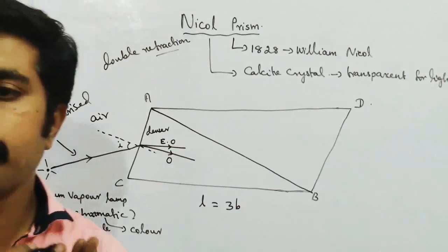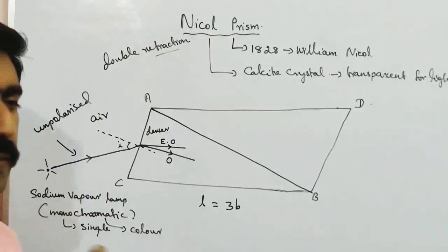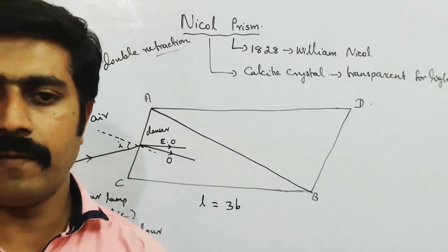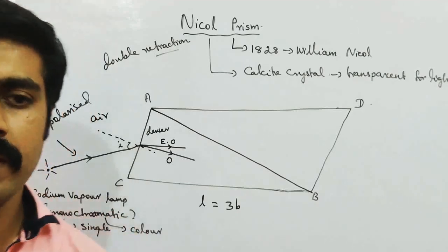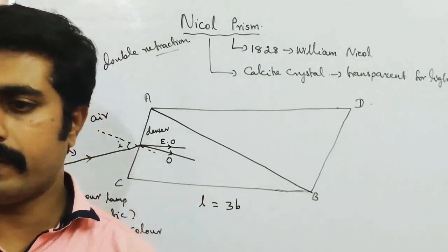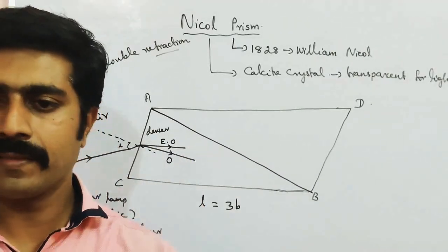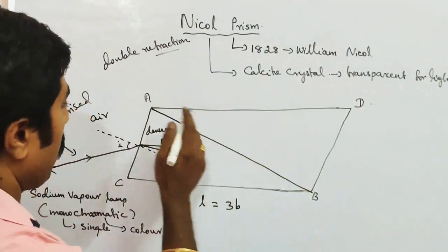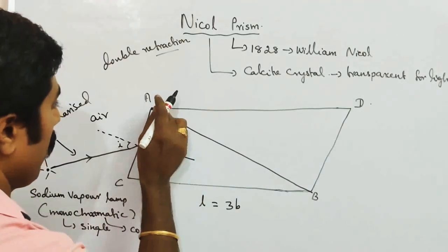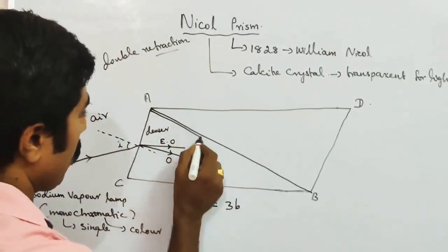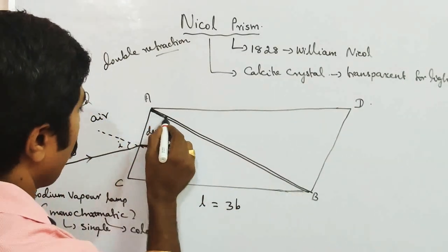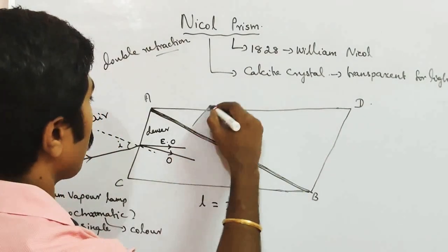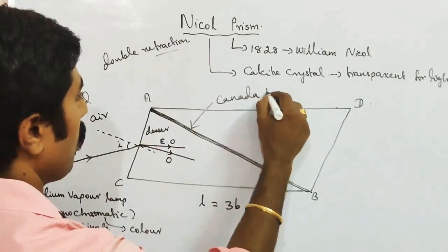The calcite crystal should be split into two pieces by cutting along the diagonal. The two pieces are then joined using Canada Balsam. Canada Balsam is also a transparent material for light — it is a cement, a pasting material. So you cut it and paste it with Canada Balsam.